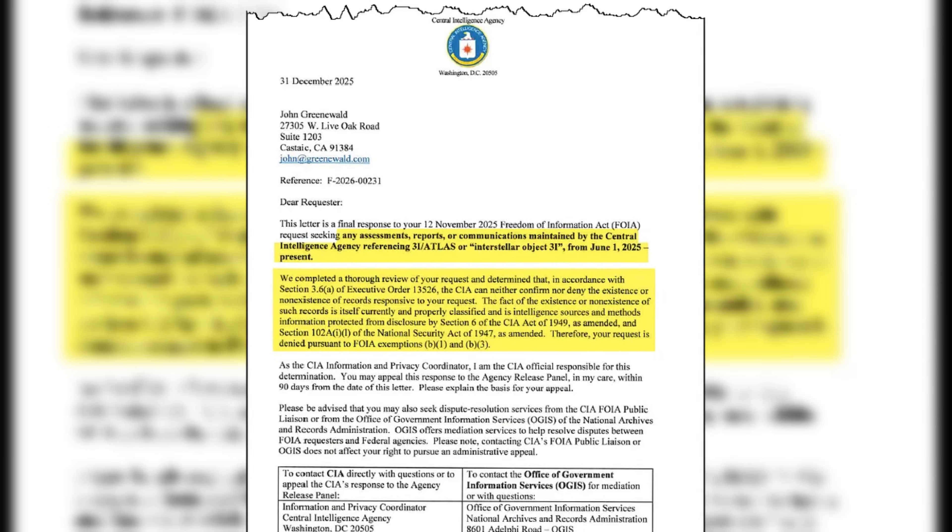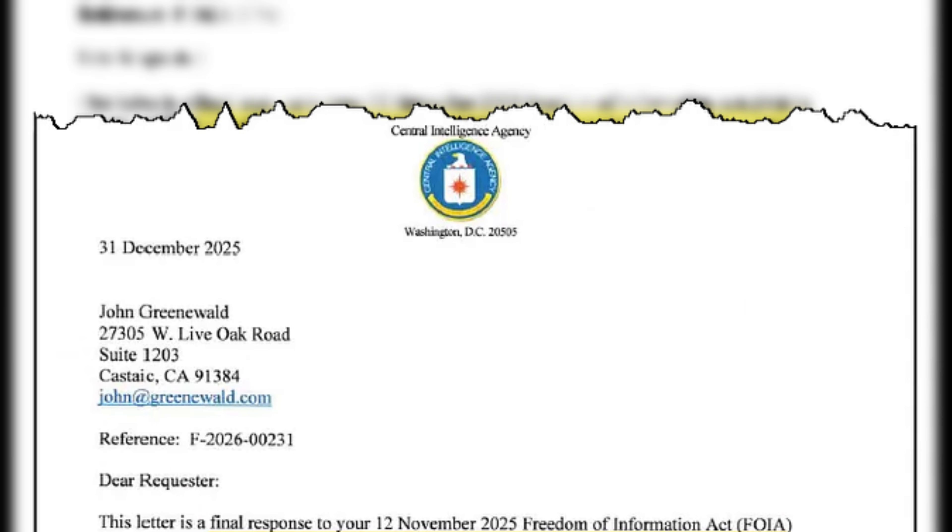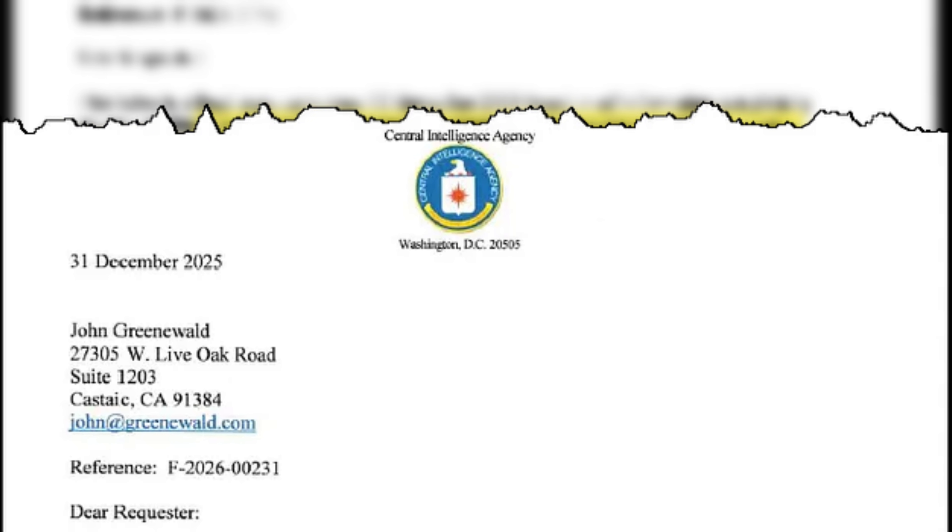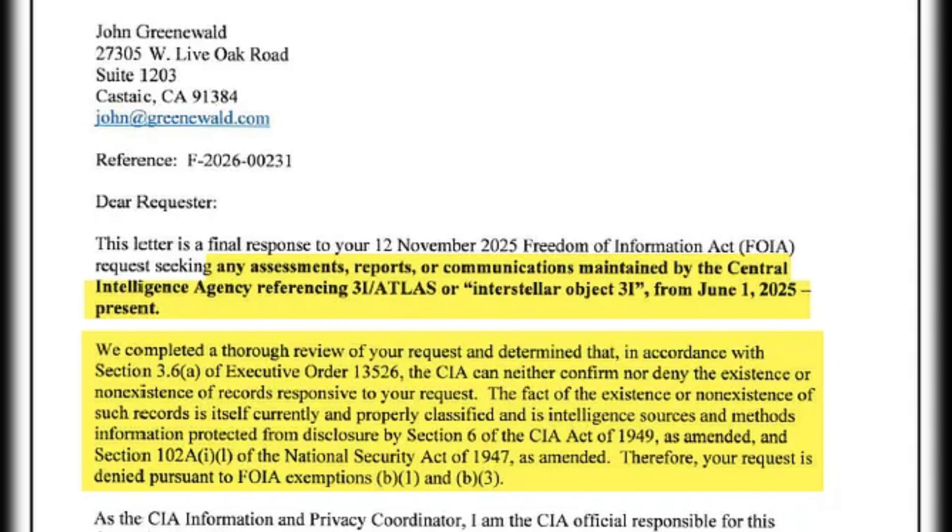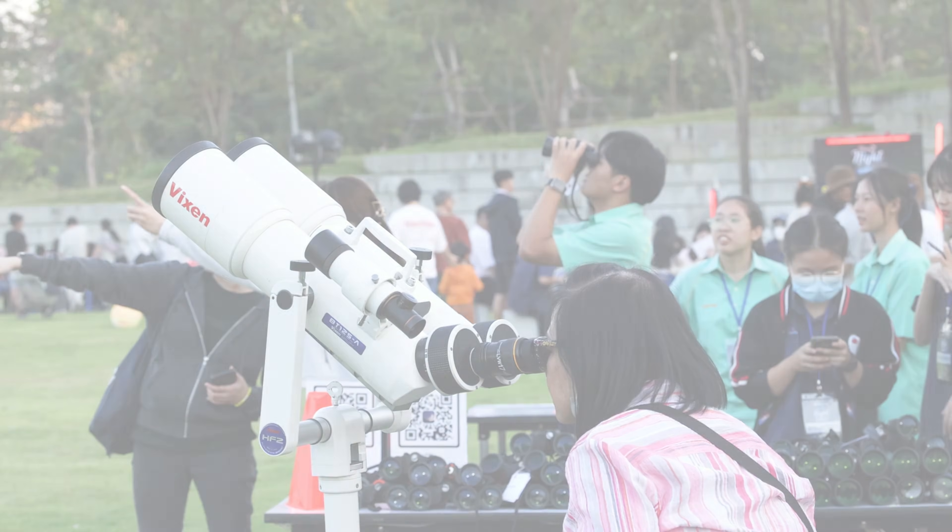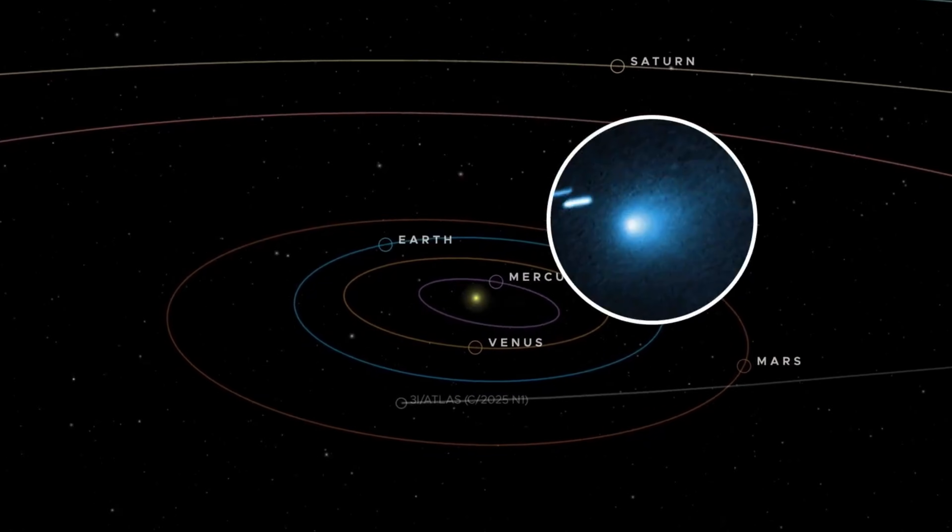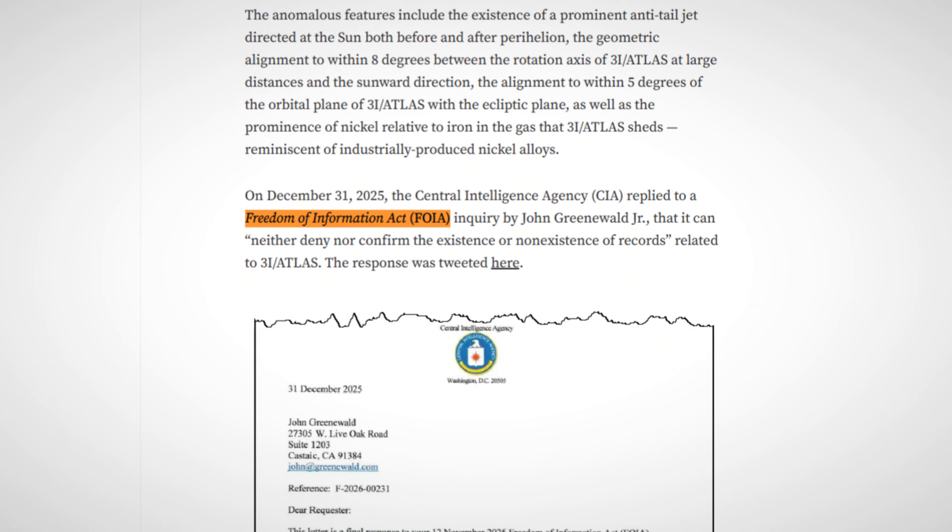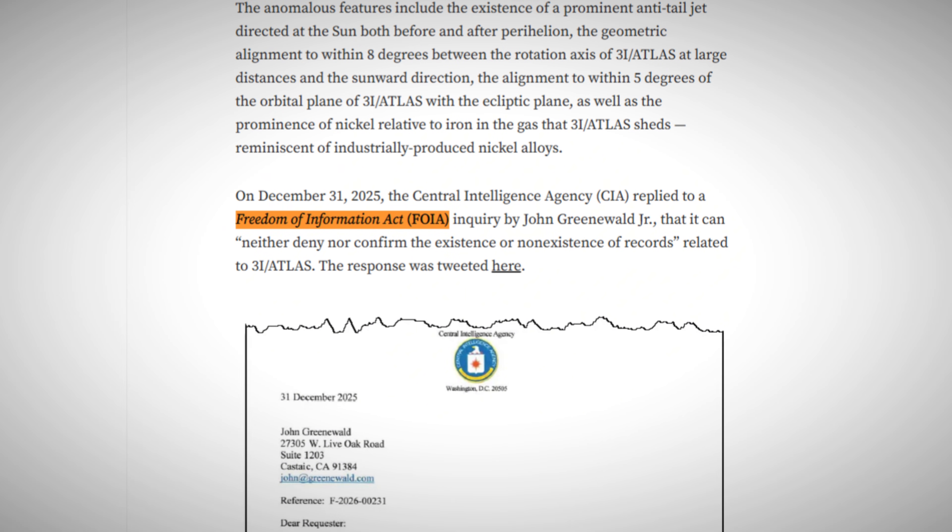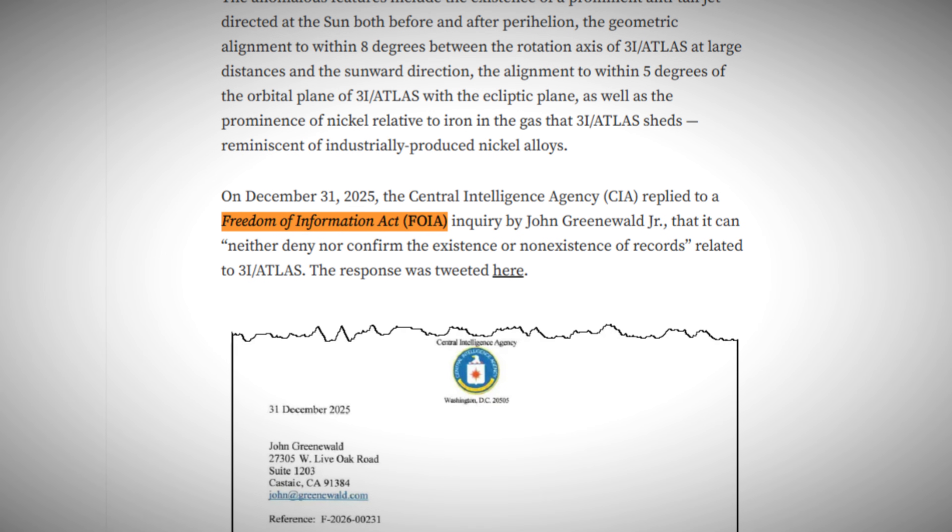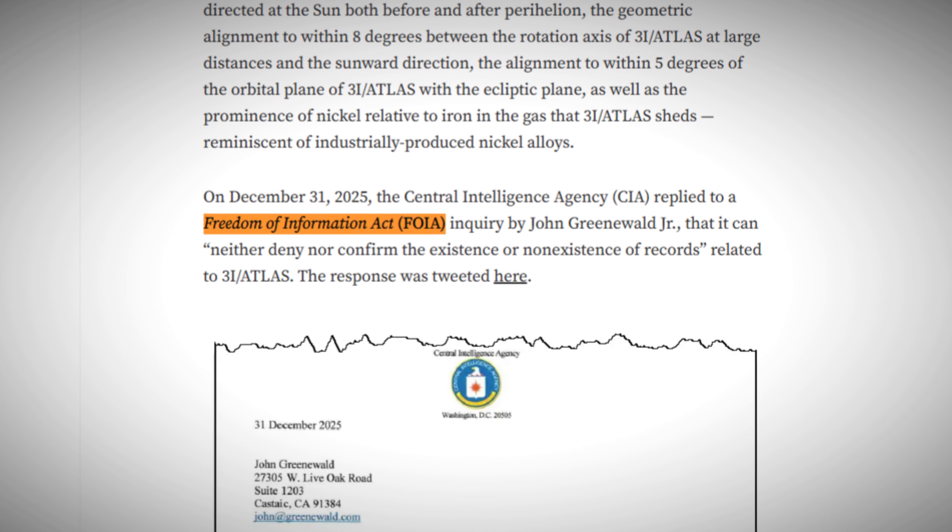In a shocking new development, the CIA has refused to confirm or deny any records related to the interstellar object 3I Atlas, despite growing public interest and its unprecedented journey through our solar system.